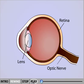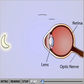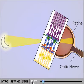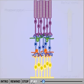Visual processing begins in the retina, the receptive surface inside the back of the eye. Light enters the eye, passes through the layers of cells in the retina, and strikes the photoreceptors located in the back of the retina.